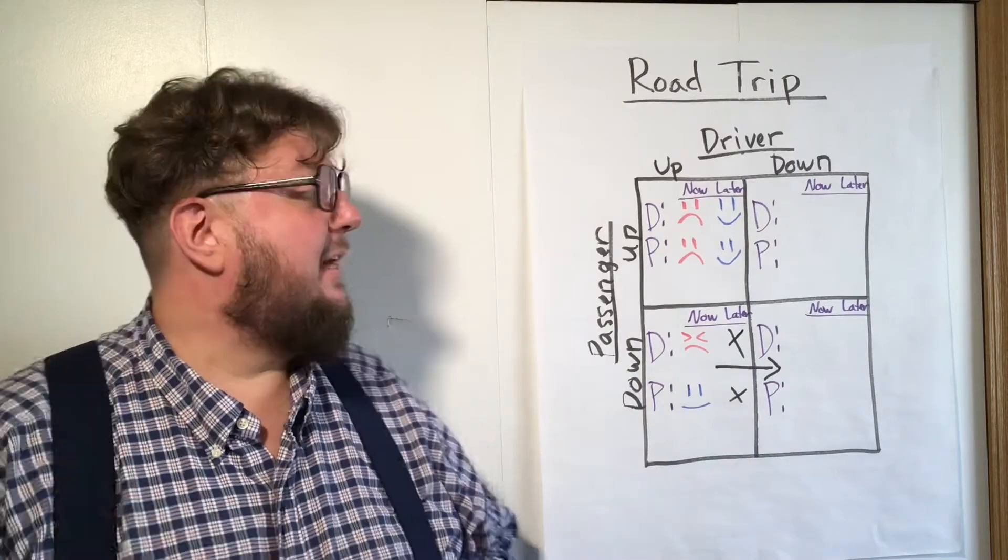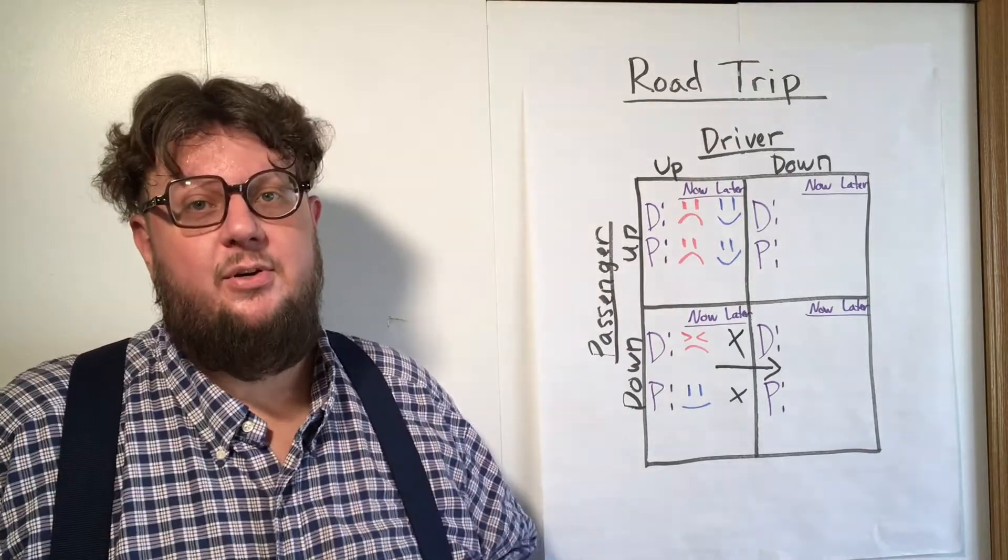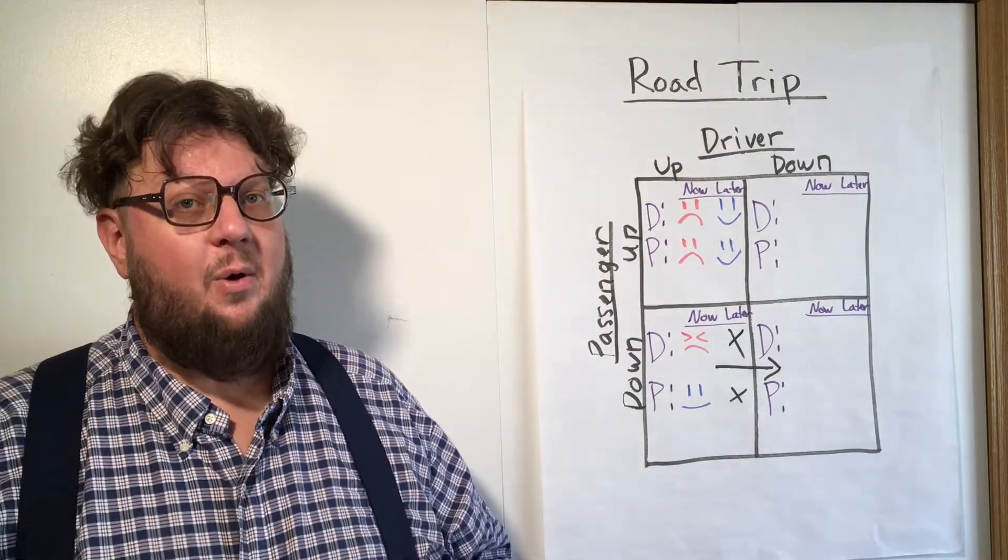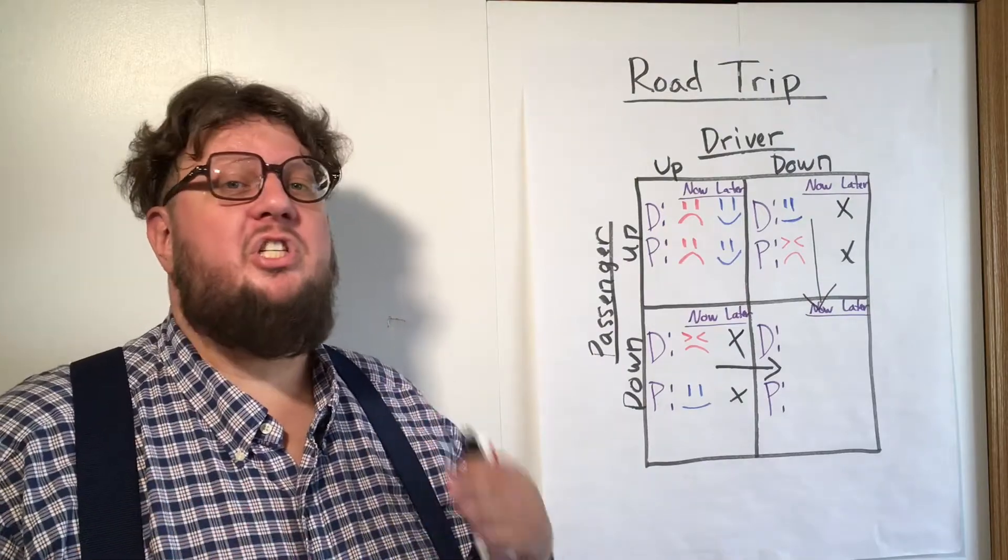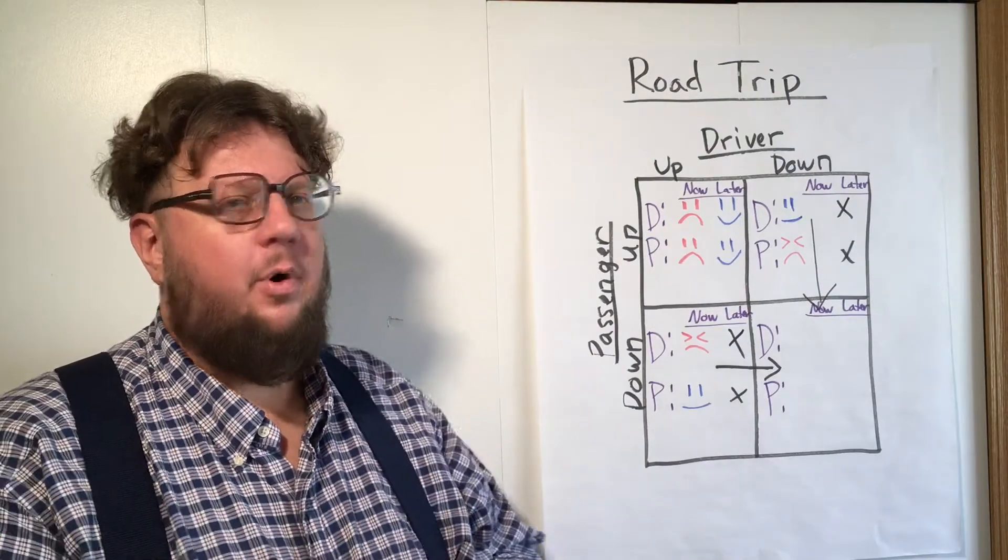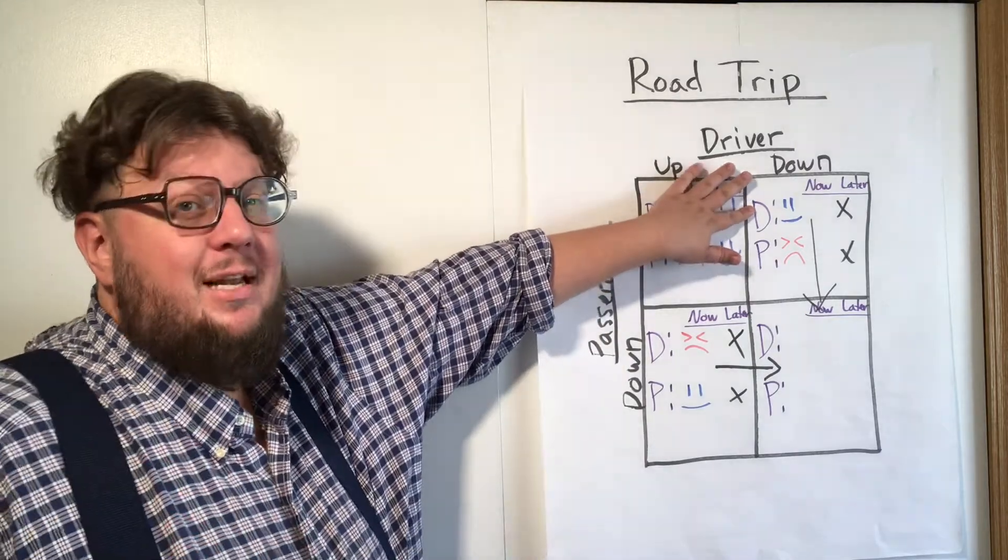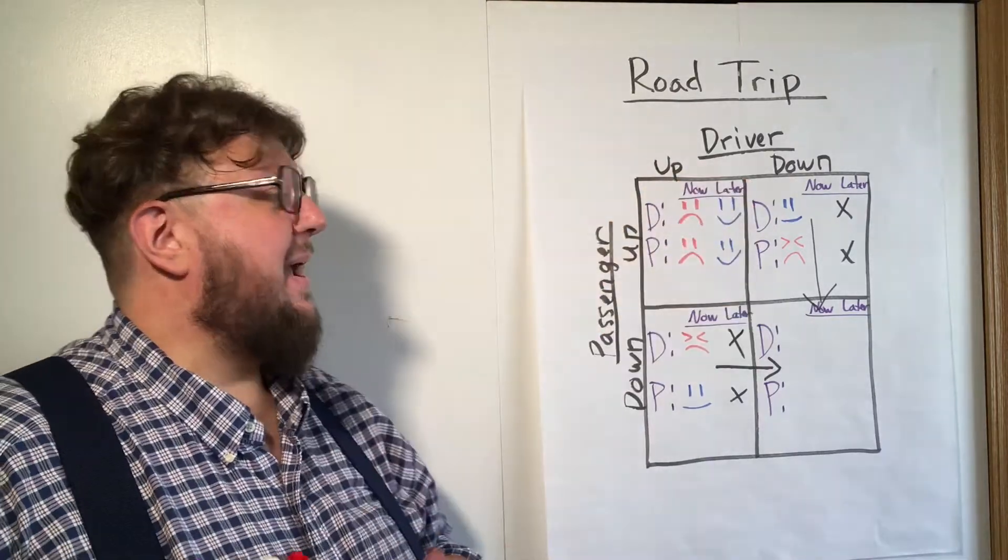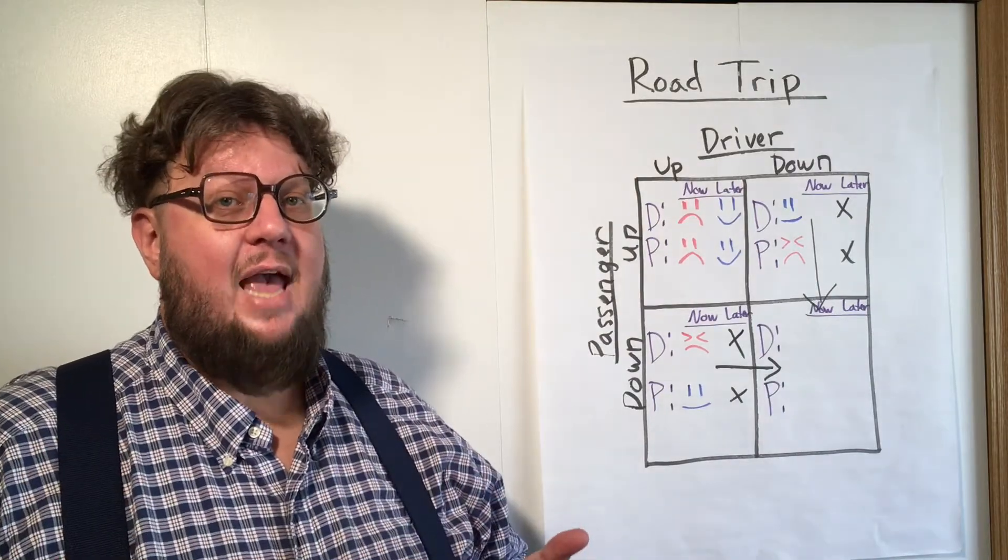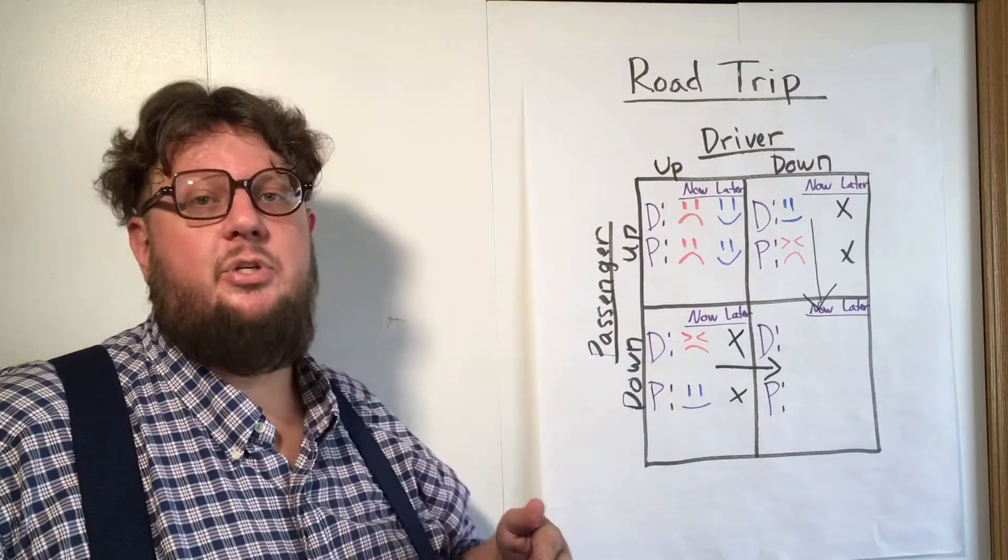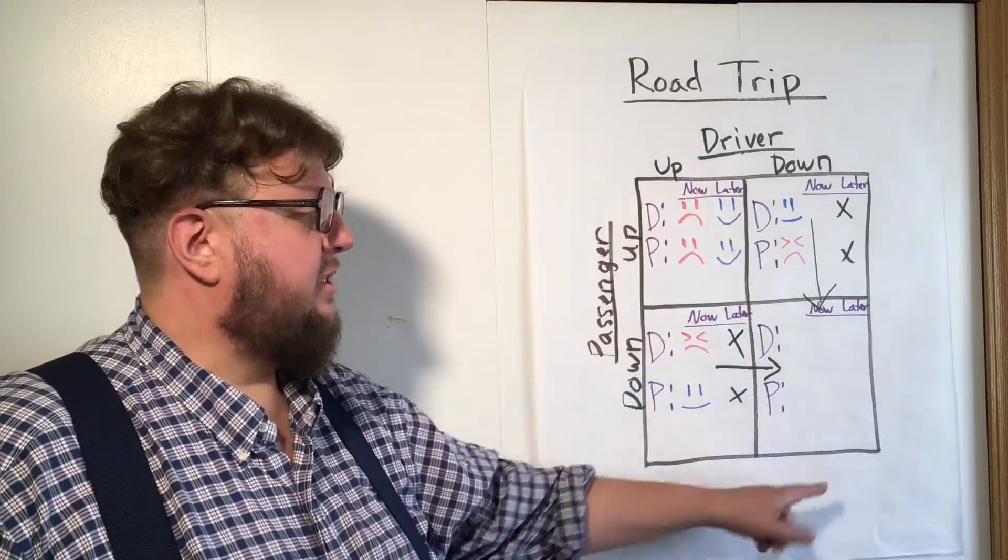Now let's do the same scenario but with the driver putting her window down first and the passenger leaving her window up. And as you see it's just the opposite, we just change which player has which reaction. For this square over here you have the driver semi-happy because she's getting some relief from the heat and the passenger is not really happy at all, a little bit angry because of what's happening. And in fact there won't be a later solution for them because the passenger will change her behavior and push us down to here.